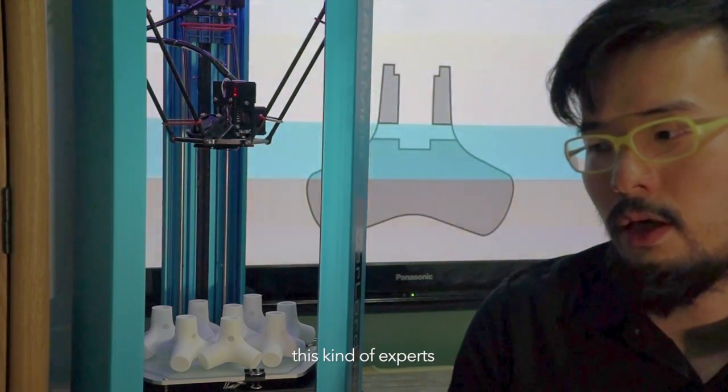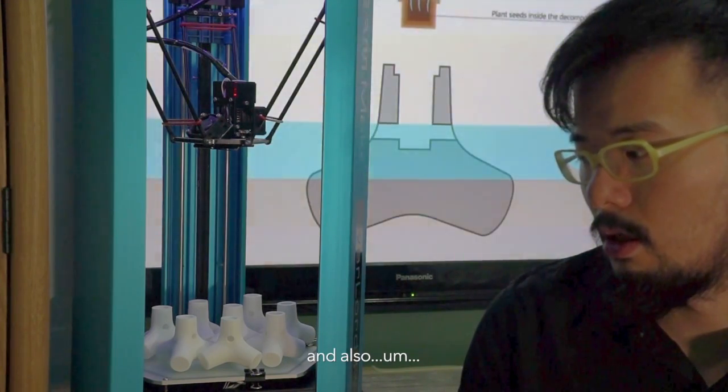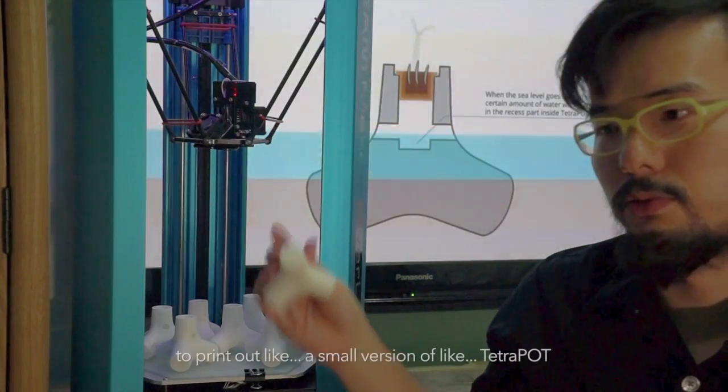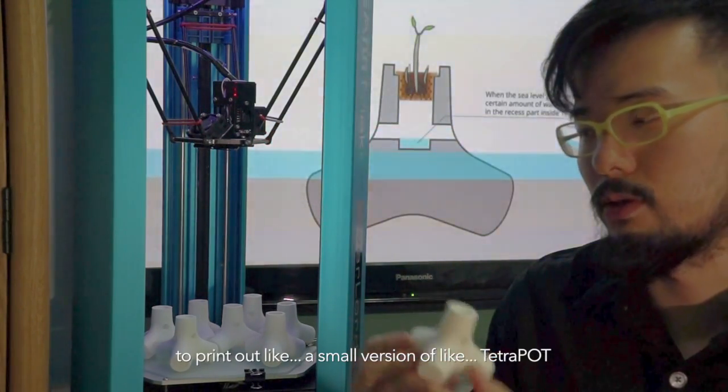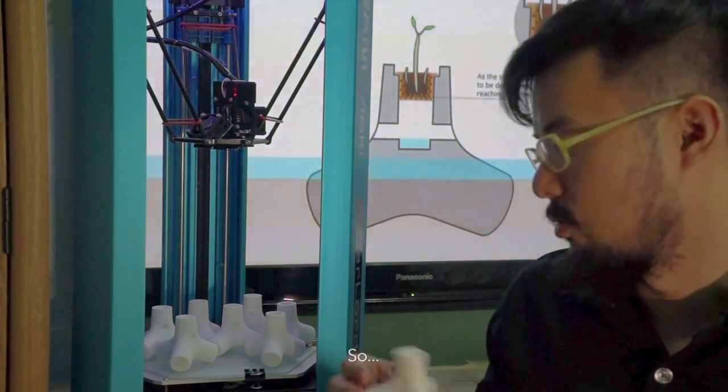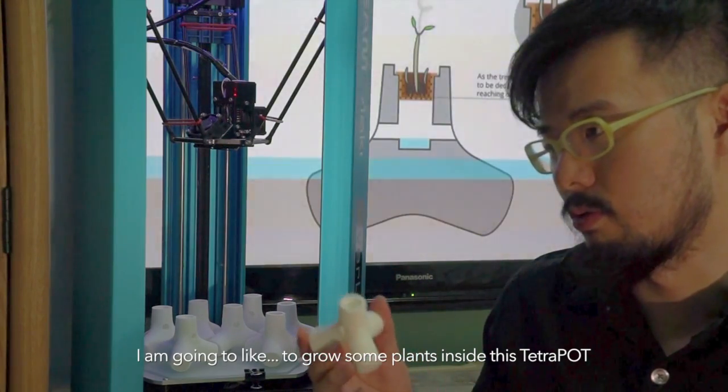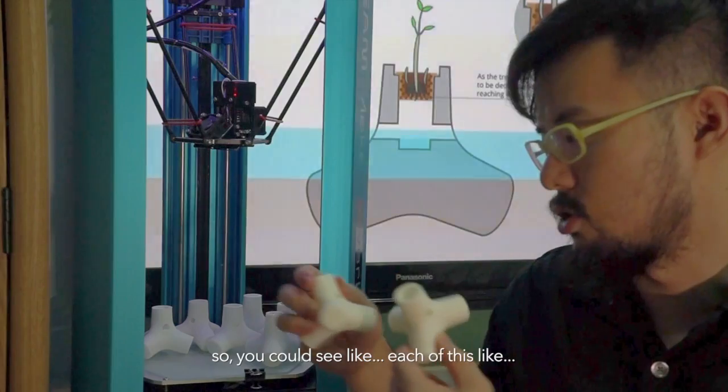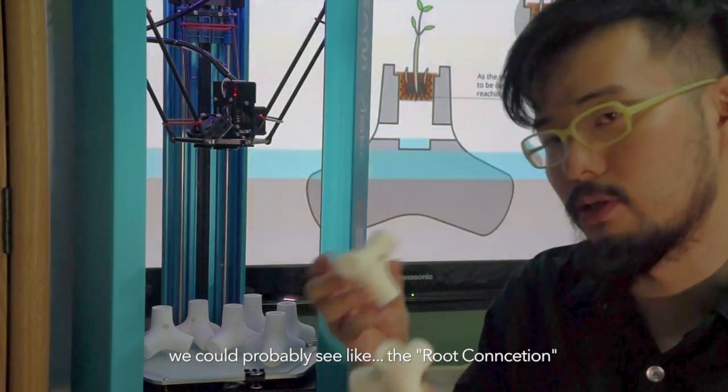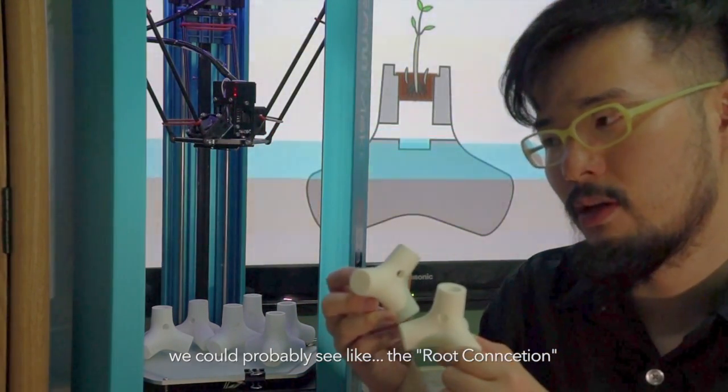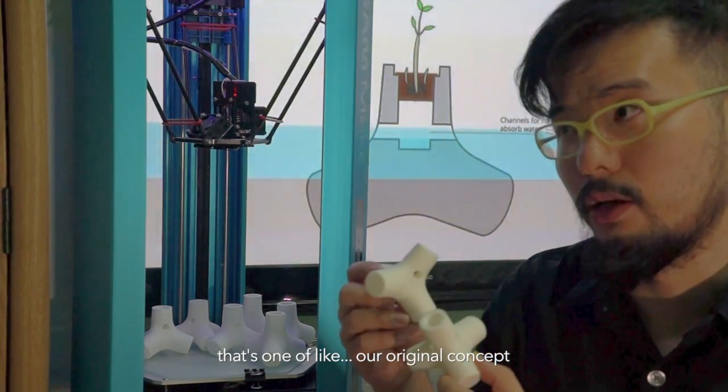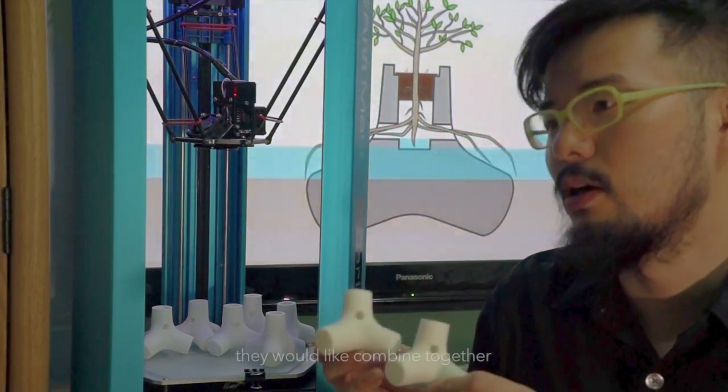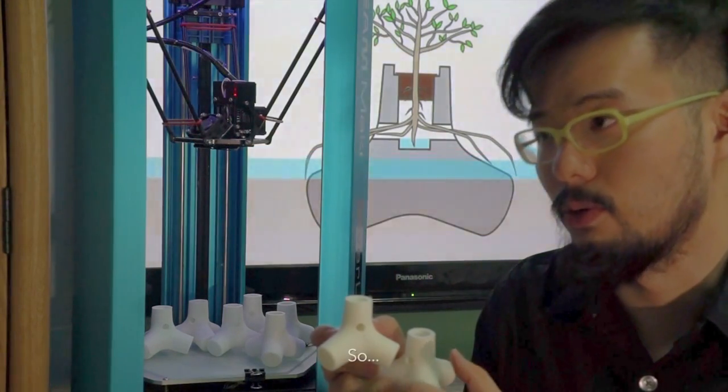We've also done some prototyping - we use a 3D printer to print out a small version of the tetrapod. I'm going to grow some plants inside this pot, so you can see the root connection. That's one of our original concepts - if the roots connect together, they will combine and protect the coastal line.